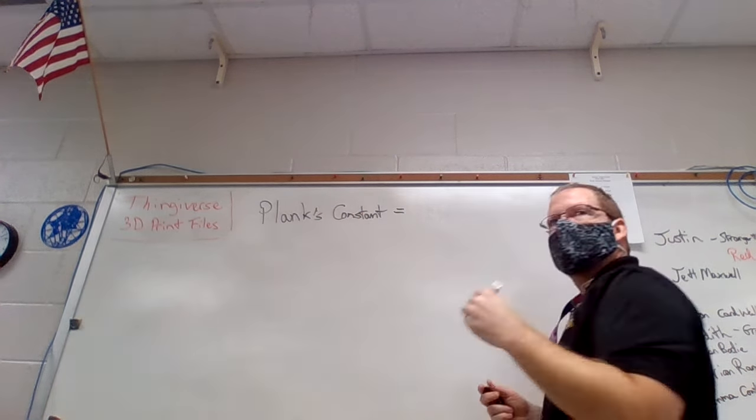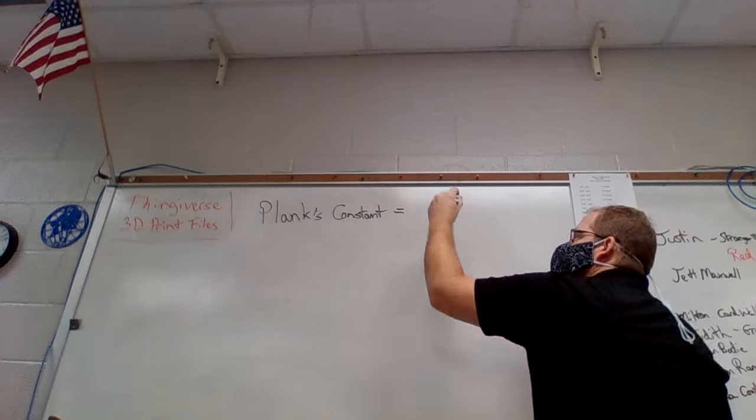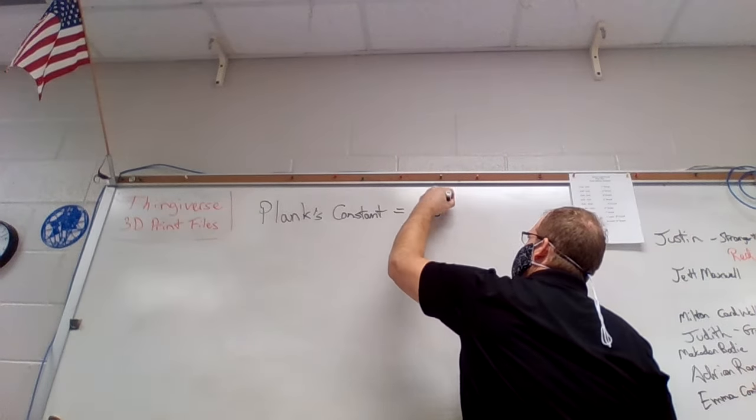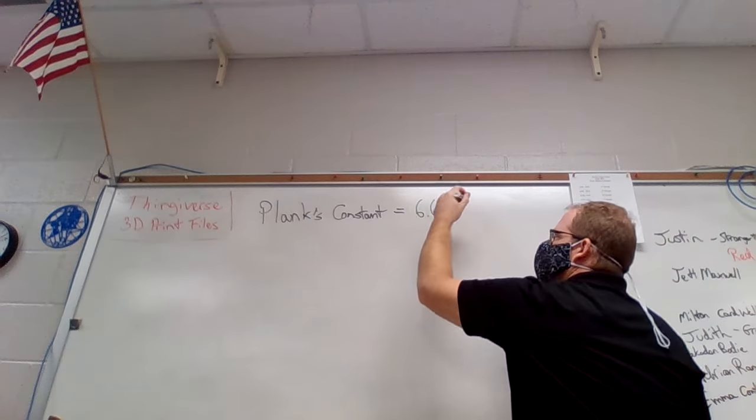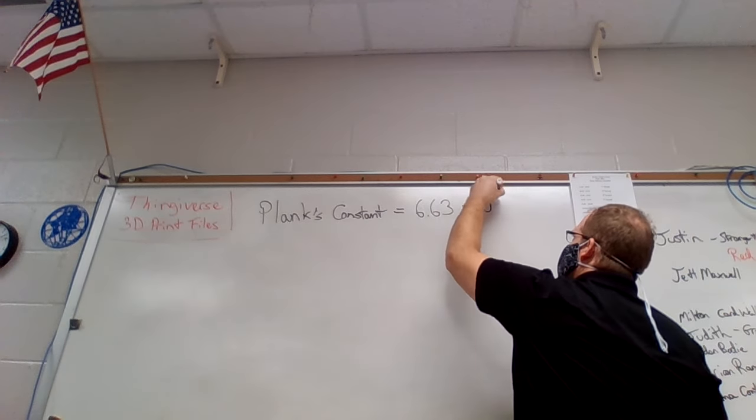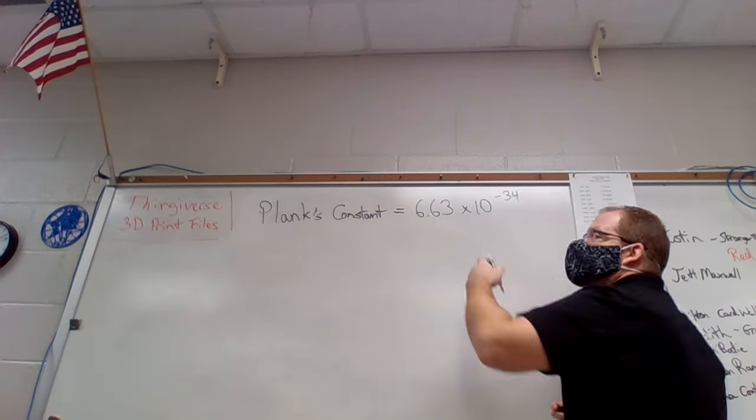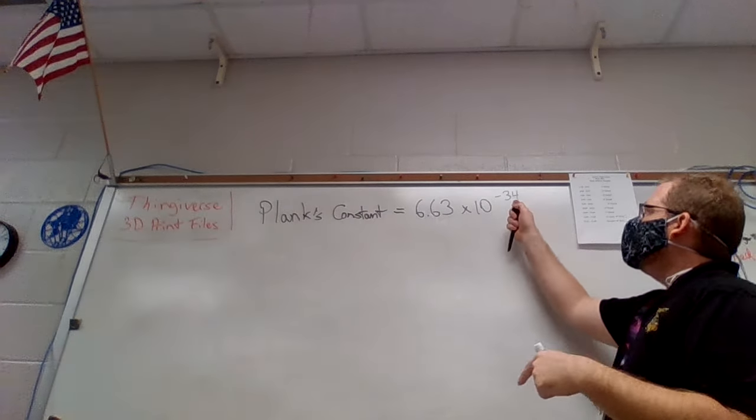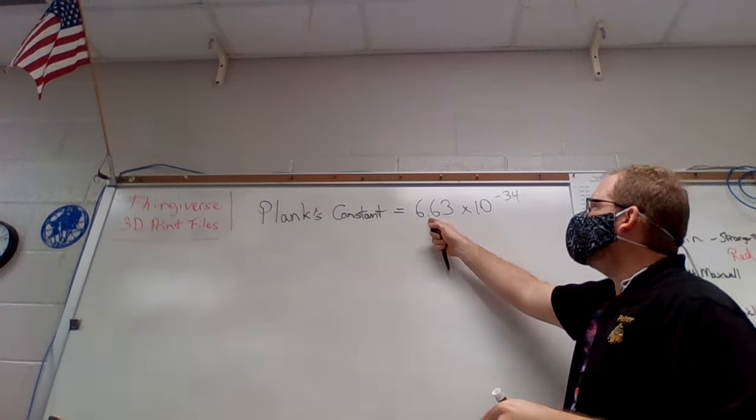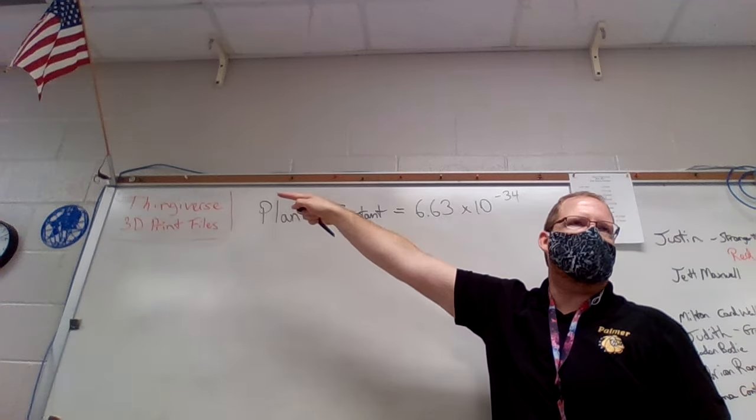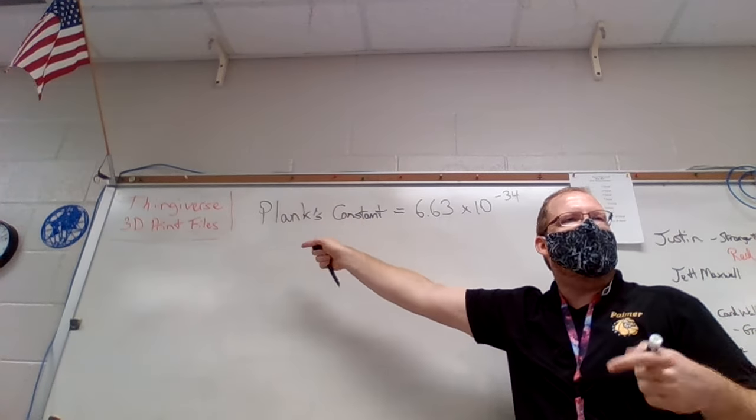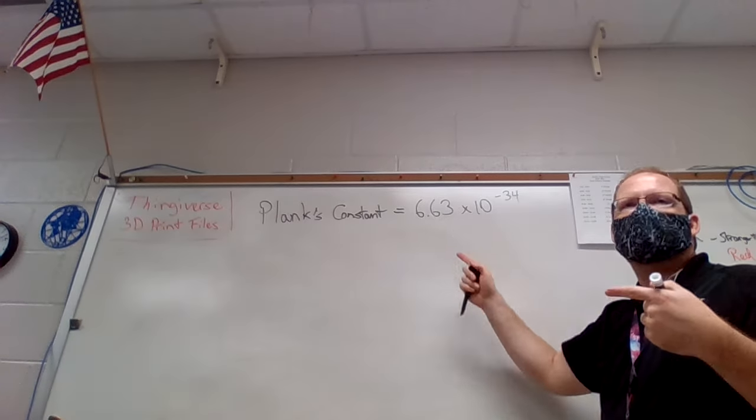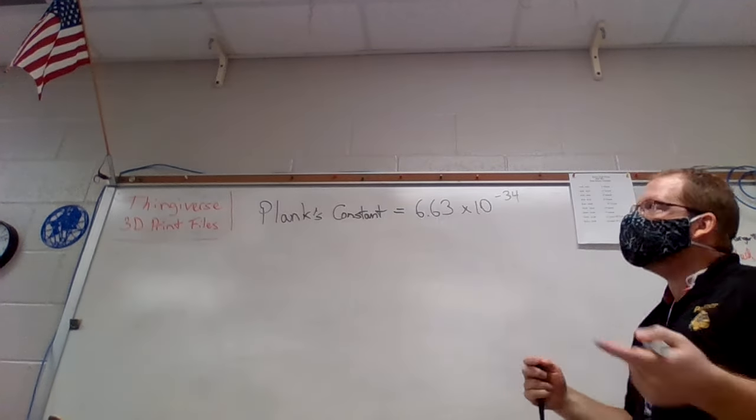So just like the other one, we need Planck's constant. Does anybody remember it? Does anybody have good memory? 6.63, I think, times 10 to the what? Negative 34. Yeah, negative 34. Good. A really, really, really small number. So negative 34 means I would move the decimal 34 times that direction and add zeros in between the decimal and the 6. So that's a really, really small number. And that's in joule seconds.